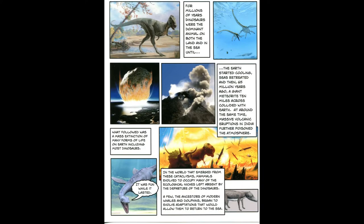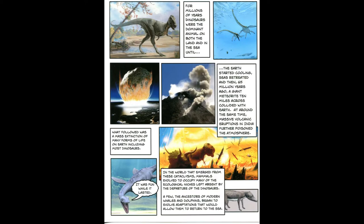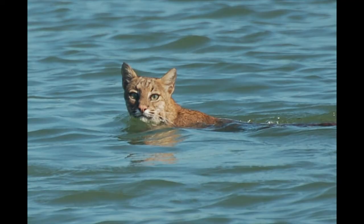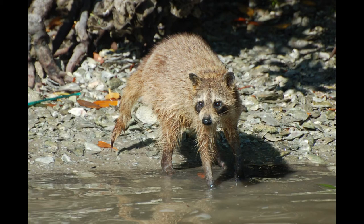For millions of years, dinosaurs were the dominant animal on both the land and in the sea, until the Earth started cooling, seas retreated, and then 65 million years ago, a giant meteorite 10 miles across collided with the Earth. At around the same time, massive volcanic eruptions in India further poisoned the atmosphere. What followed was a mass extinction of many forms of life on Earth, including most dinosaurs. In the world that emerged from these sudden and violent changes, also known as cataclysms, mammals evolved to occupy many of the ecological niches left absent by the departure of the dinosaurs.